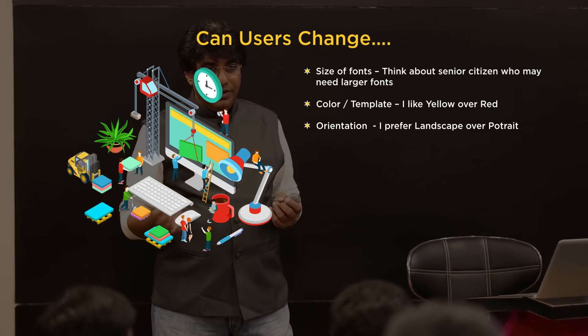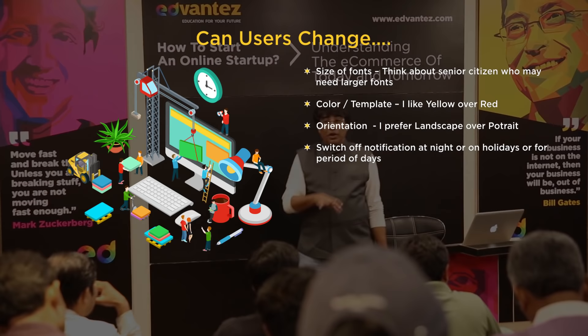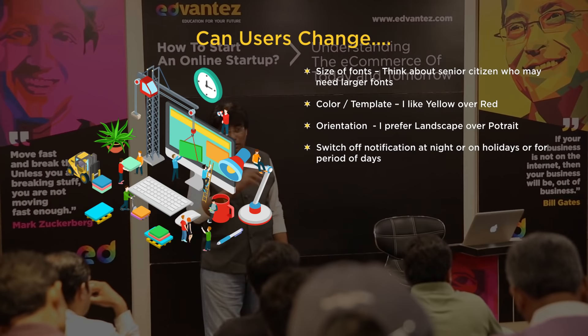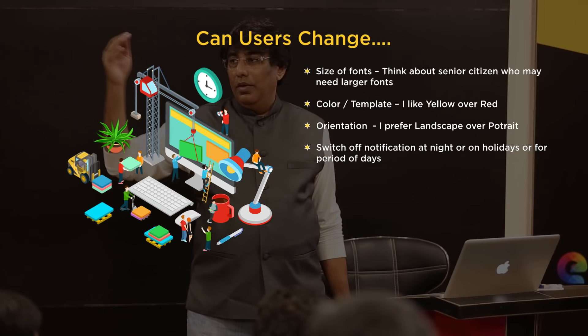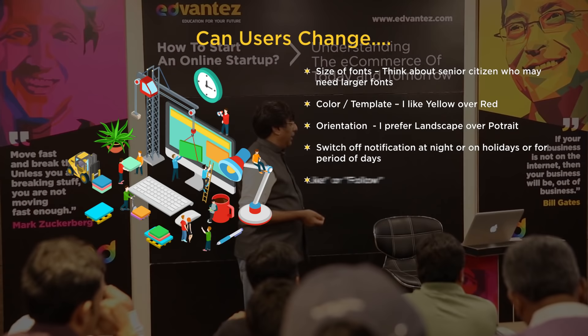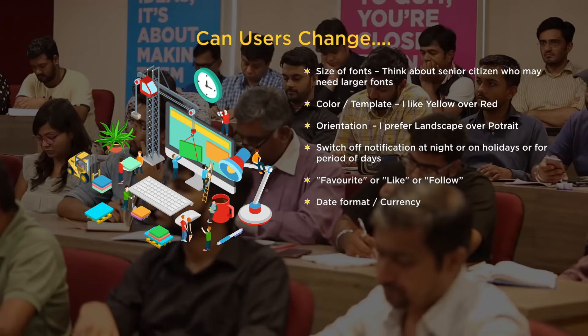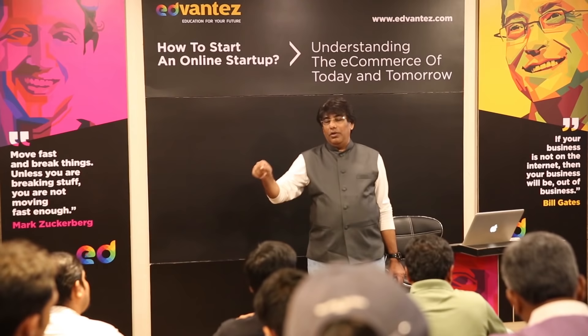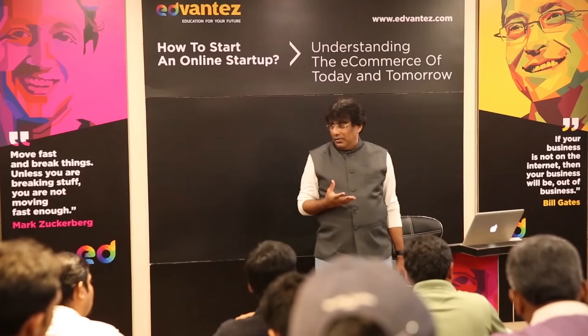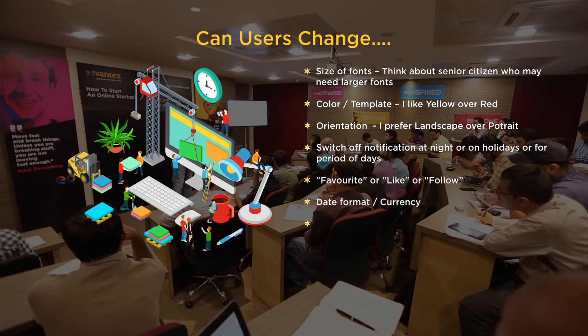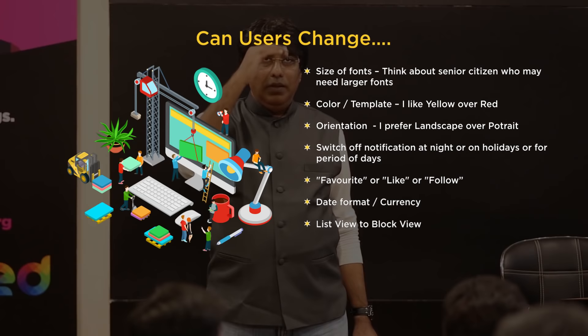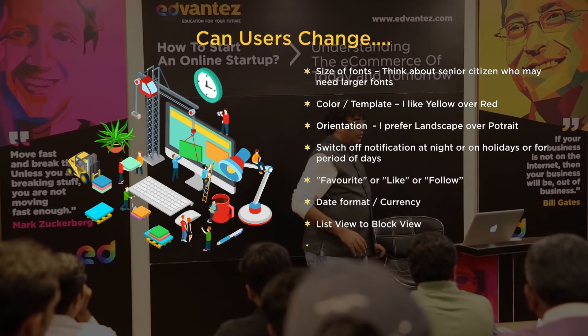Do you allow notifications to be switched off, with a from-and-to time preference? For example, not wanting notifications from 9 PM to 7 AM. Do you allow customers to mark favourites, follow, or like? What about date format or currency — do you prefer 'SAT 16 May 2016' versus '16-05-2016'? Some remember alphabetically, others numerically. Do you give list view or block view when scrolling data? Do you give time format in 12 or 24-hour format?